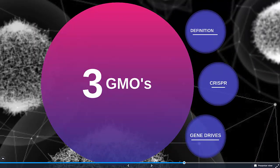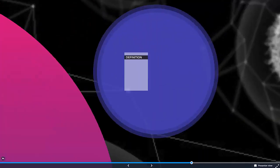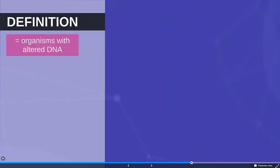GMOs or genetically modified organisms are something you've probably heard about in the news and certainly read about in the textbook. A genetically modified organism is just an organism with some sort of altered DNA and there can be different levels of altering DNA.